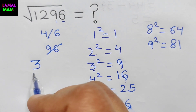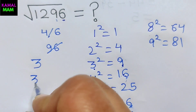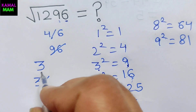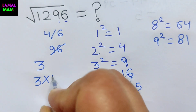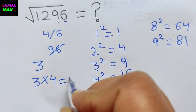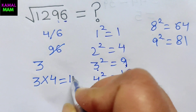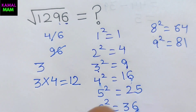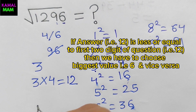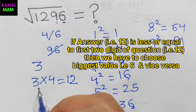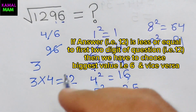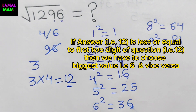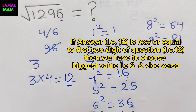In the next step, multiply 3 by the number that comes after 3, which is 4. So 3 into 4 is 12.